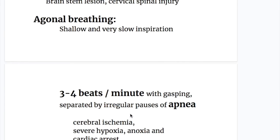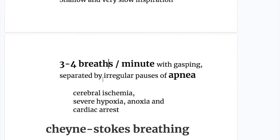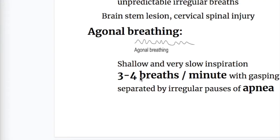The next breathing pattern with apnea is agonal breathing. In agonal breathing, there are shallow and very slow inspirations — three to four breaths per minute — with gasping, separated by irregular pauses of apnea. It is characterized by slow, shallow respiration at three to four breaths per minute, separated by periods of apnea.